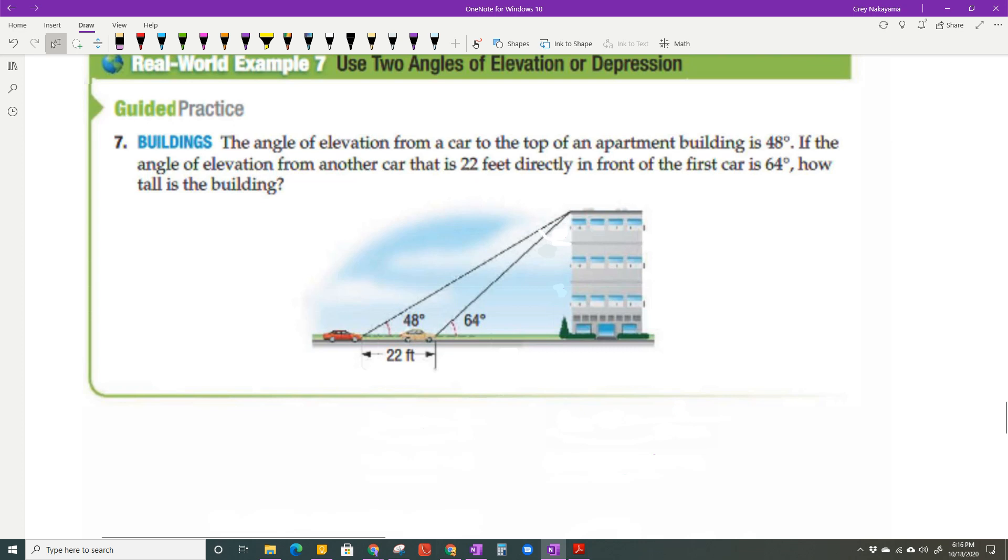Number seven, this is probably the hardest one, so if anything, you need to pay attention to this problem, because you're going to have something like this in your homework and on the quiz or test. The angle of elevation from a car to the top of the apartment building is 48 degrees. That's his angle of elevation. If the angle of elevation from another car that is 22 feet in front of him is 64 degrees, how tall is the building? So I'm looking for the height of the building. I've got 64 degrees, so this is a triangle, and if that's 64, this angle is 90, so the angle up top is 26 degrees.